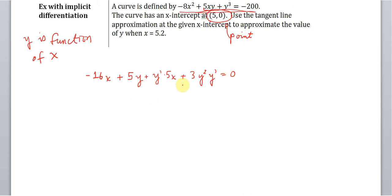And then we need to isolate y'. So everything that doesn't have y' in it we are going to move to the other side of the equation. And everything else we're going to leave on the left side. So we're going to have 16x - 5y is equal to y' times 5x plus 3y²y'. I'm going to factor out a y'.